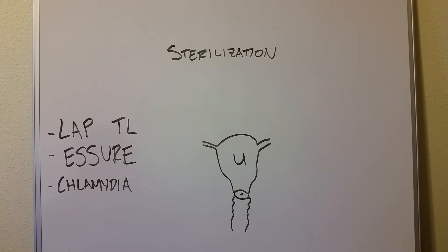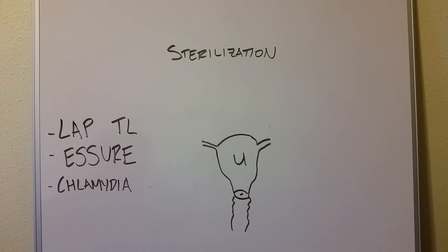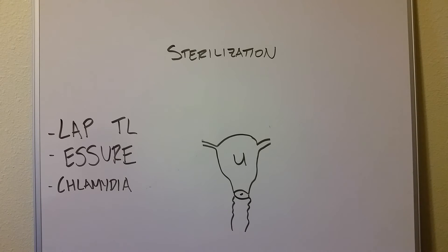The nice thing about the Essure procedure is that we don't have to make any incisions — we don't have to cut in. Even with laparoscopic tubal ligation, you still have these small eight-millimeter incisions on the patient's abdomen, which predisposes the patient to — although rare — complications like infection, healing problems, or fascial dehiscence. So the nice thing about the Essure procedure is that it is transcervical.